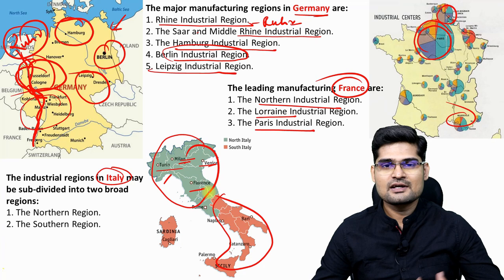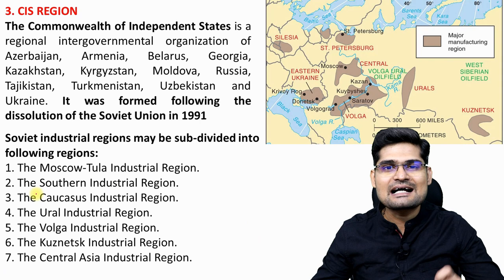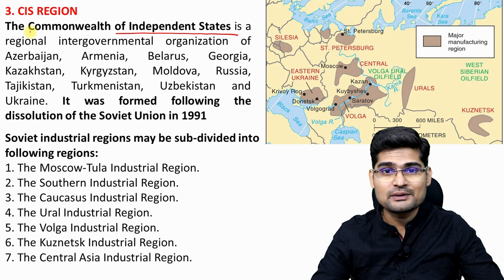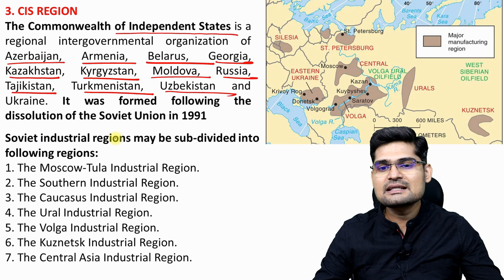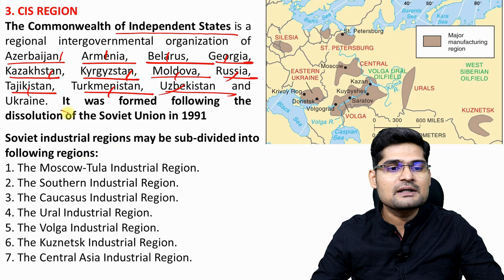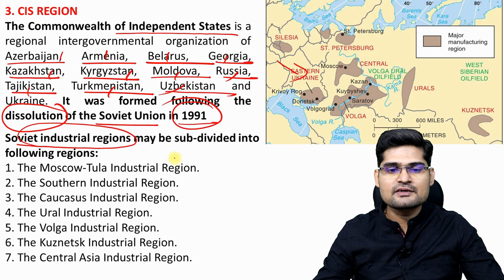The CIS — Commonwealth of Independent States — includes Azerbaijan, Armenia, Belarus, Georgia, Kazakhstan, Kyrgyzstan, Moldova, Russia, Tajikistan, Turkmenistan, and Uzbekistan. These countries formed after the dissolution of the USSR in 1991. Soviet industrial regions are further subdivided into Russian/Moscow, Southern industrial, Caucasus, Ural, Volga, Kuznetsk, and Central Asia industrial regions.